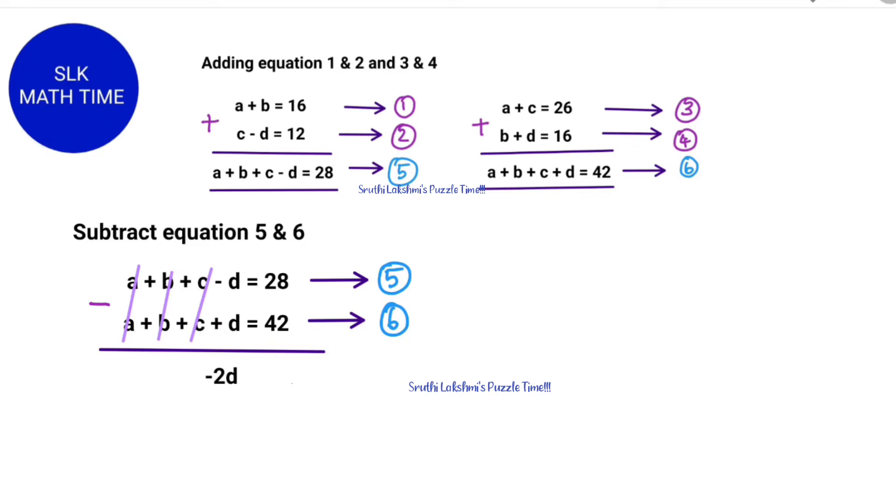So now we do 28 minus 42 which is minus 14. So minus 2D is minus 14. That means D equals 14 divided by 2 which is 7. So now we know that D is 7.